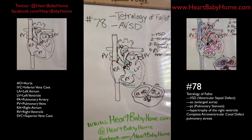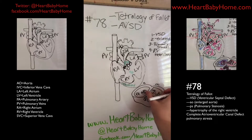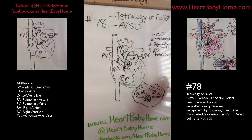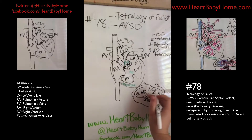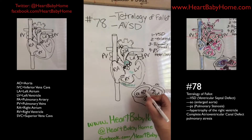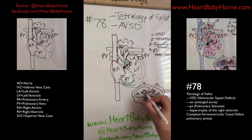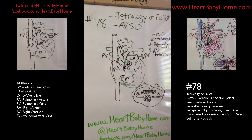In a normal heart the valves attach to the septal wall. With the atrioventricular canal defect, these two valves — instead of attaching to the septal wall — attach to each other, so they can't close all the way. That leaves a big hole in the middle of the heart.